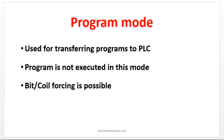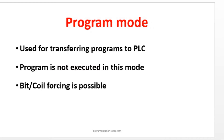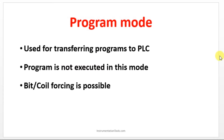The first one is Programming Mode. Obviously, to write the program you have to be in this programming mode. Whenever you are creating a project and you want to write a logic, you have to be in the program mode. This is also used to transfer the program from your software to PLC. You cannot see the output in the programming mode, and you can force a bit or coil. Forcing is possible but you cannot see the exact output of the logic you have created in this program mode.